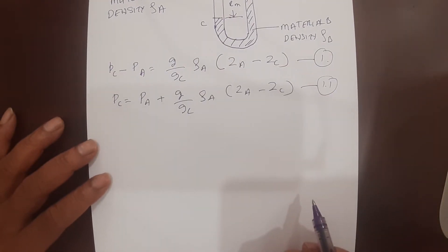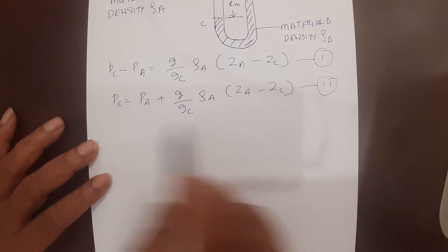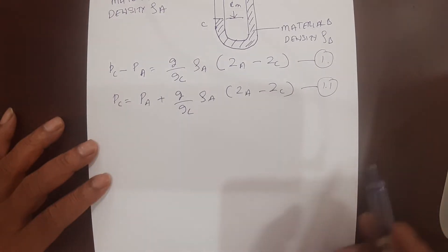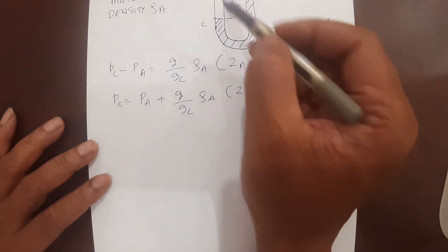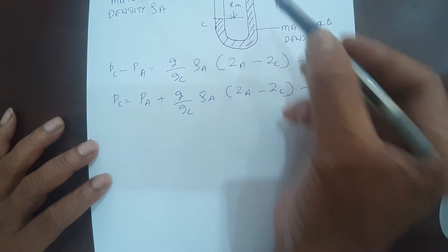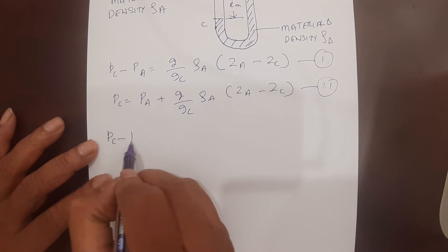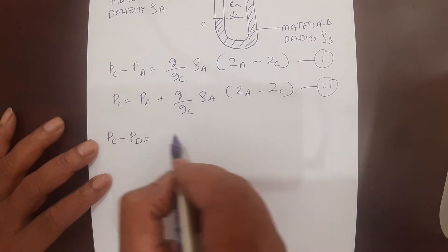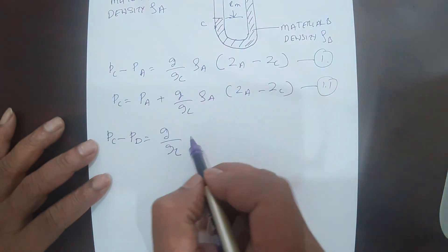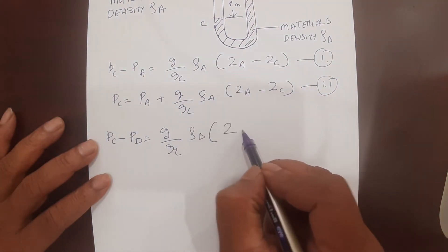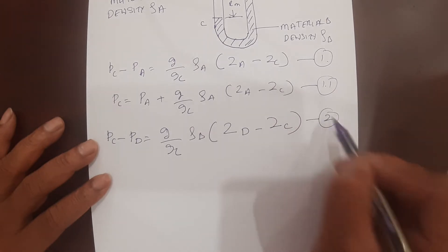Now applying the hydrostatic equilibrium condition between stations C and D: P_C minus P_D equals (G/Gc) × rho_B × (Z_D minus Z_C). This is Equation 2.